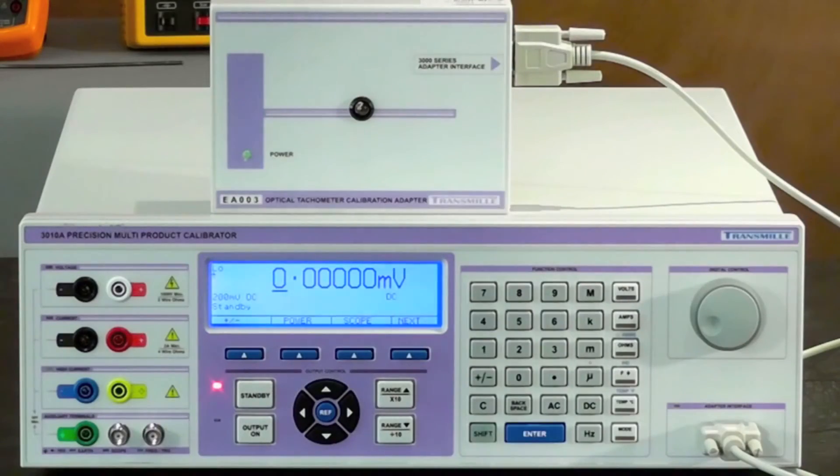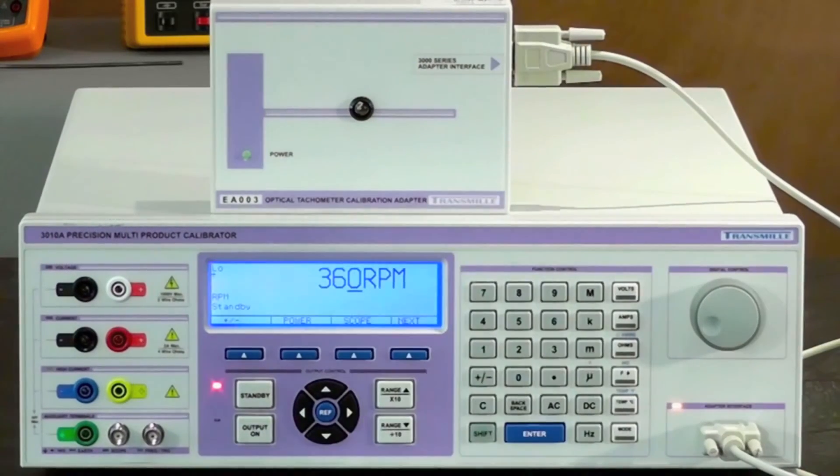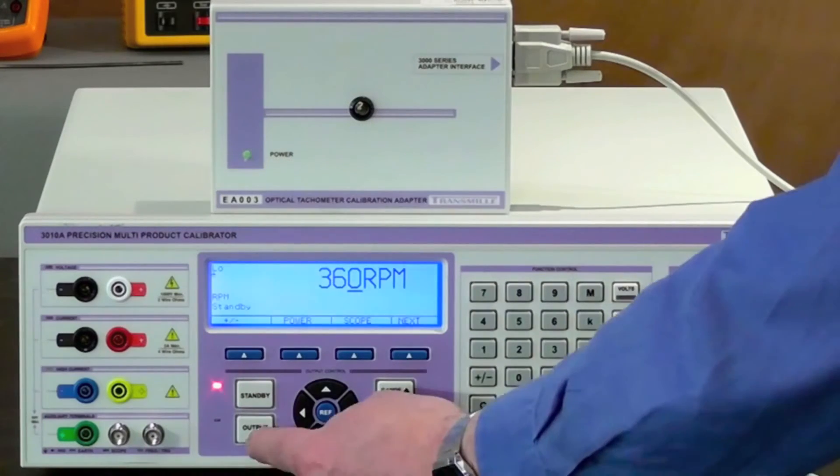To operate the adapter, select the RPM function using the blue soft keys. To activate the adapter, select output by using the soft keys.